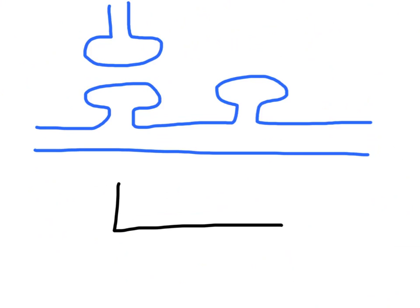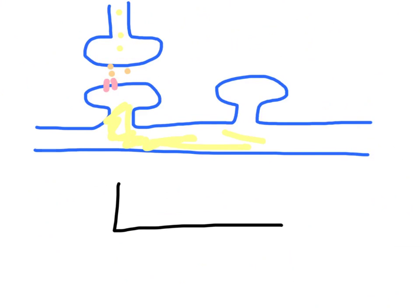The end result is that whereas before it would take a very large signal and a very large release of glutamate to activate a lot of receptors to cause a full depolarization to travel down the postsynaptic neuron, now only a small signal and a very small release of glutamate is needed to activate a full action potential in the postsynaptic neuron.